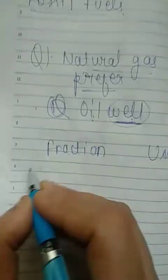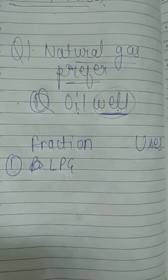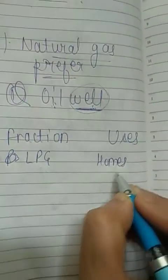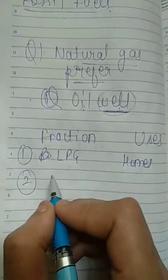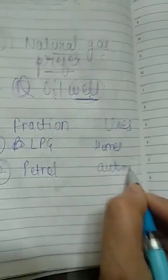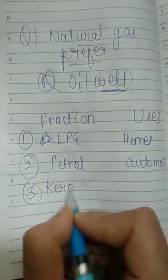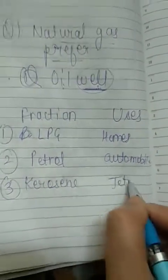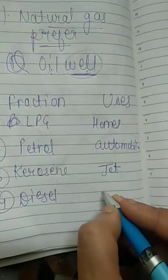The different fractions of petroleum and their uses are: first, petroleum gas (LPG — liquefied petroleum gas), used as fuel for homes and industry; second, petrol, used as fuel for automobiles; third, kerosene, used as fuel for aircraft; and fourth, diesel oil, used for heavy motor vehicles.